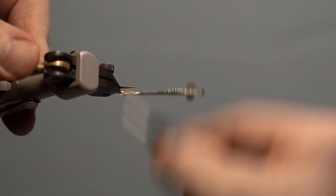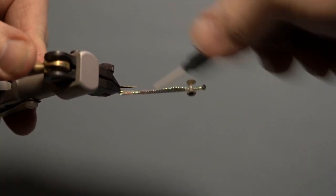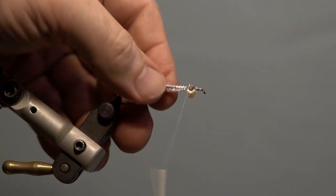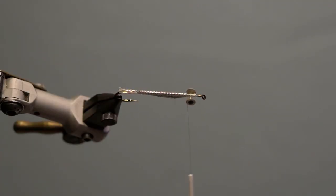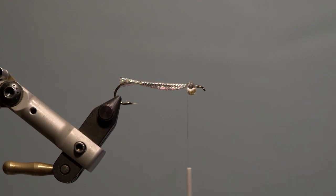Next, secure the eyes from underneath the hook, between the eye of the hook and the tape. Use figure 8 wraps to secure and add head cement.